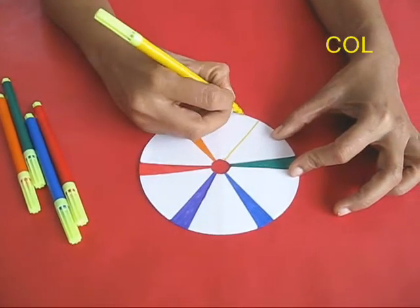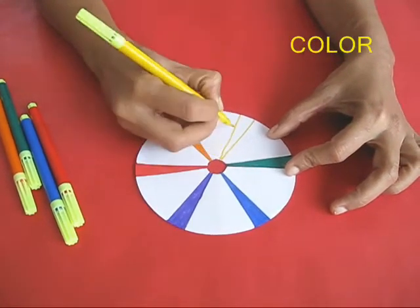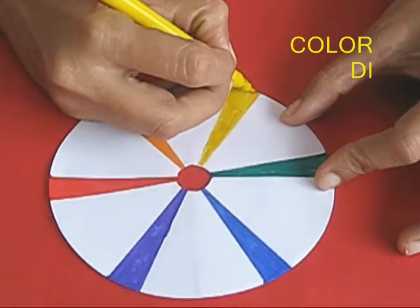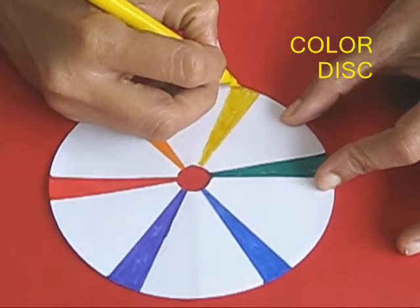Take a card sheet with a hole in the middle and draw all the seven colors of the rainbow on it. The colors should be interspersed with white colors.